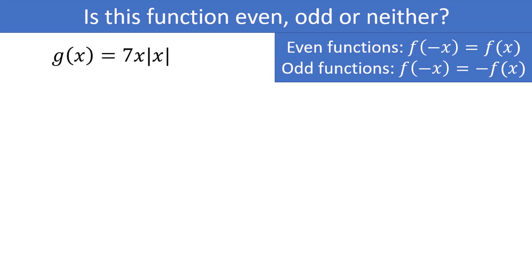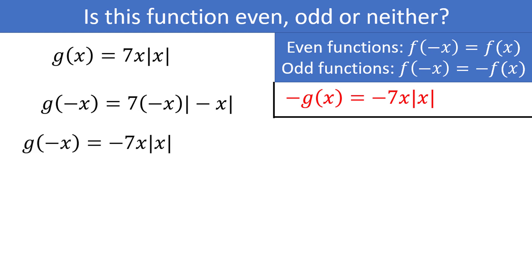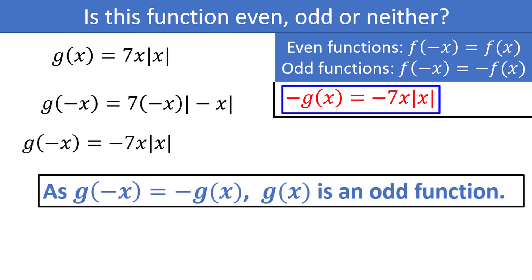What about g of x is equal to 7x times the absolute value of x? Negative g of x is negative 7x times the absolute value of x. Now g of negative x equals 7 times negative x times the absolute value of negative x, which simplifies to negative 7x times the absolute value of x, since the absolute value removes the negative sign on x. This matches negative g of x, so g of negative x equals negative g of x — g of x is an odd function.